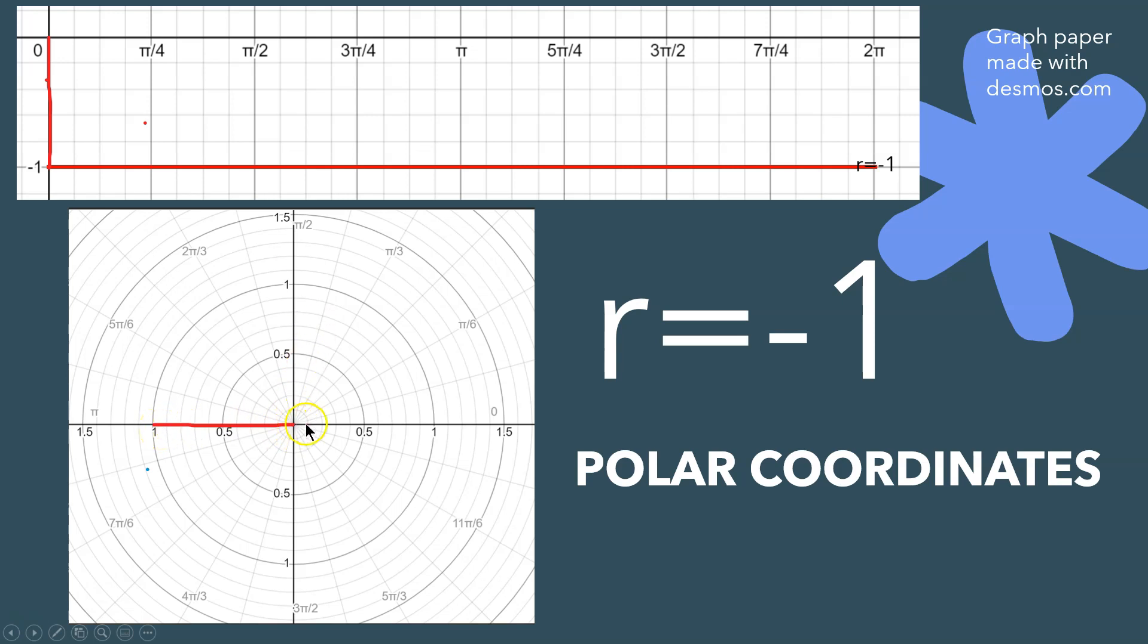So in other words, instead of going from 0 out to 1 positive on the right side, because r is negative, you've got to begin at the origin and go in the opposite direction this way.